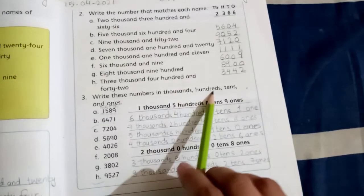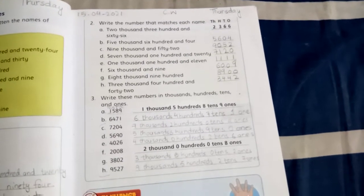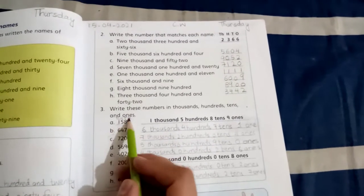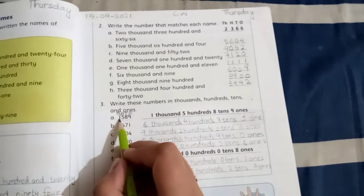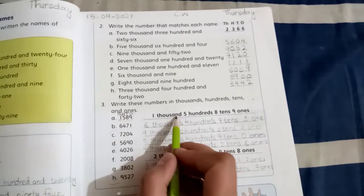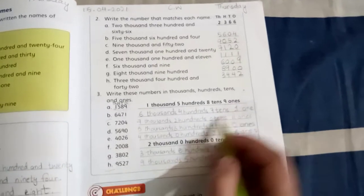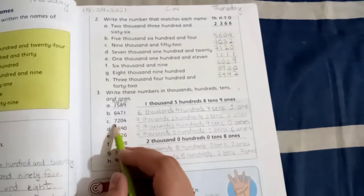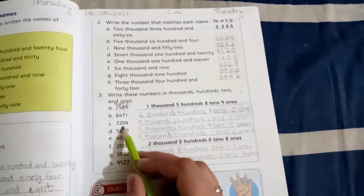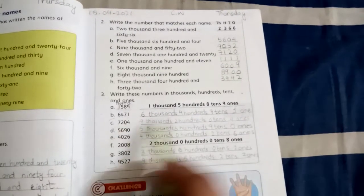Write these numbers in thousands, hundreds, tens and ones. You have to write the spelling in numbers, telling how many thousands, hundreds, ones, and tens. First, you write ones, tens, hundreds, and thousands. One thousand, so one thousand. Five hundreds, eight tens, nine ones. Next, six thousand, four hundreds, seven tens, and one one. Then seven thousand, two hundreds, zero tens, and four ones. When there is a zero in any place, you have to mention it. You write zero tens.